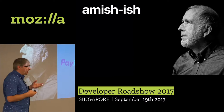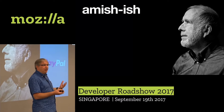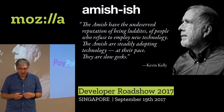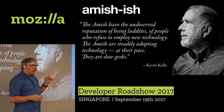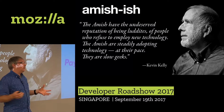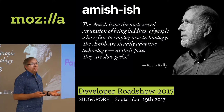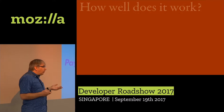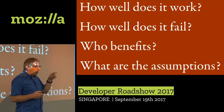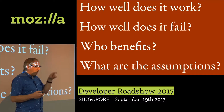Kevin Kelly actually spent a lot of time with the Amish, and he describes himself as being Amishish. The Amish get a bad rap when it comes to technology — people think the Amish reject technology, which isn't true. Actually what they do is they evaluate technology. They take their time and ask questions of the technology. The Amish are steadily adopting technology at their own pace — they are slow geeks. I like this idea of slow geeks. When we get overwhelmed by technology, whether in the browser or out there in the world, maybe we could try to be slow geeks. And more importantly, maybe we should just be asking questions of our technology: how well does it work? But also, how well does it fail? Who benefits from this particular technology? And most important of all: what are the assumptions behind the technology?